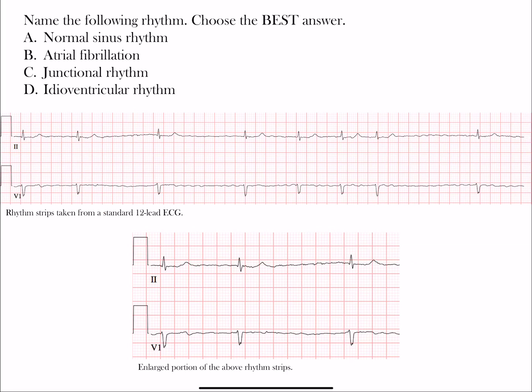Here we have our next rhythm challenge. Name the following rhythm and choose the best of these four option choices: choice A, normal sinus rhythm; B, atrial fibrillation; C, junctional rhythm; D, idioventricular rhythm. Four different rhythms — let's choose the best one.